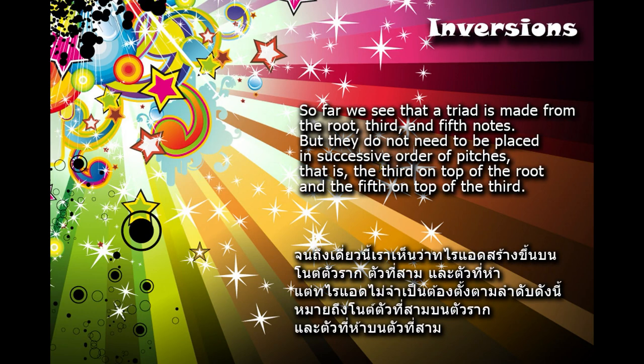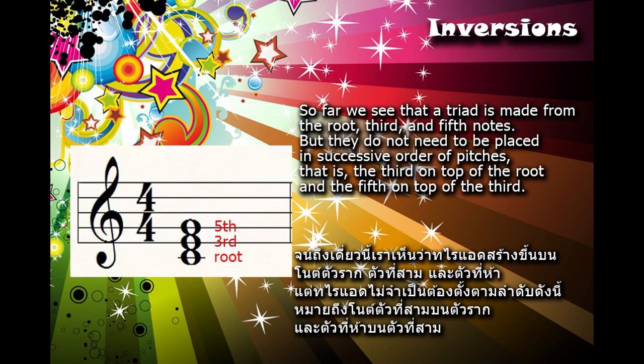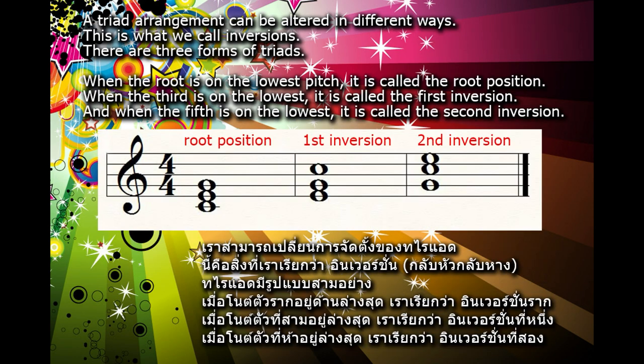So far we see that a triad is made from the root, third, and fifth notes. But they do not need to be placed in successive order of pitches — that is, the third on top of the root and the fifth on top of the third. A triad arrangement can be altered in different ways. This is what we call inversions.